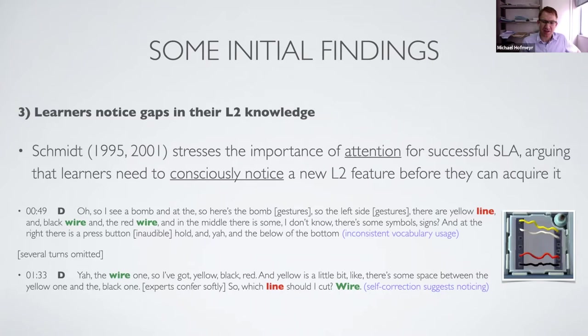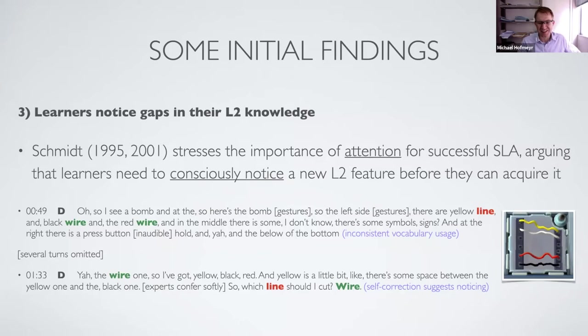For example, we have a defuser seeing the wire module and talking about the 'lines,' but the more appropriate word would be 'wires' — 'cut the second wire.' She uses 'wire' and 'line' interchangeably at first, but then you can see her correct herself — 'which line should I cut... wire.' Instances like this indicate noticing, and this is a big factor in how SLA can work through peer learning, suggesting the occurrence of second language acquisition.